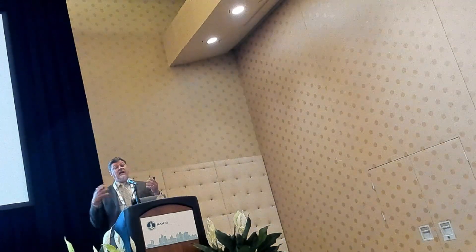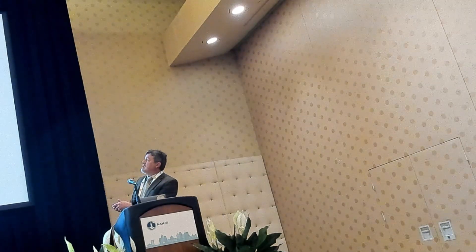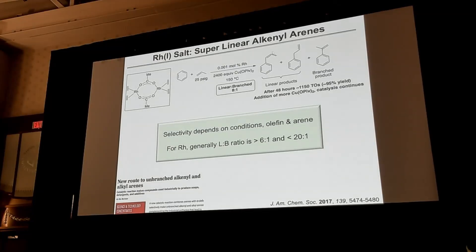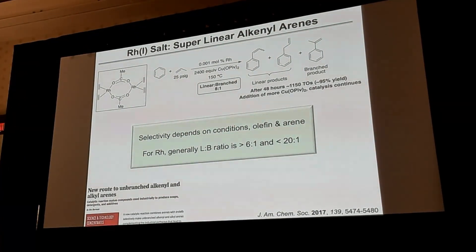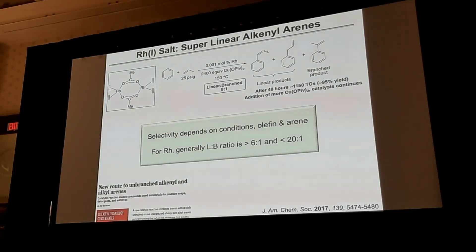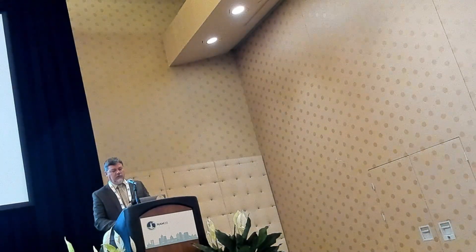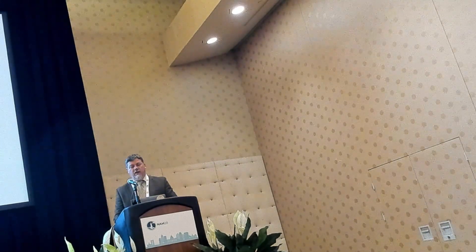Our rhodium catalyst makes the unsaturated variants of these super-linear compounds. We can start with simple rhodium salts — we don't need any fancy ligands with rhodium. We can start with rhodium ethylene acetate or other carboxylate salts. Here I've shown some data with propylene. Under these conditions, we get about an 8:1 linear-to-branched ratio. You can get a mix of the vinyl and the allylic linear products. The selectivity for anti-Markovnikov to Markovnikov depends upon the exact conditions — temperature, copper loading, acid loading — and it varies for our catalysts from about 6:1 up to about 18:1. So we have conditions where you can get very high selectivity.